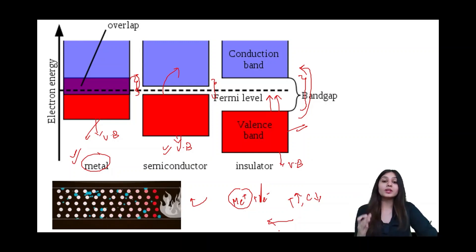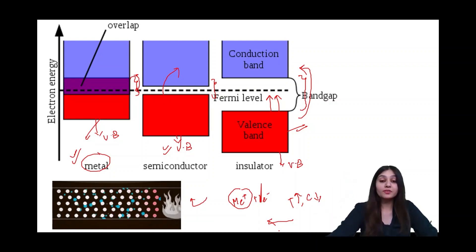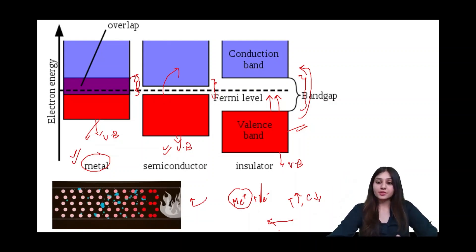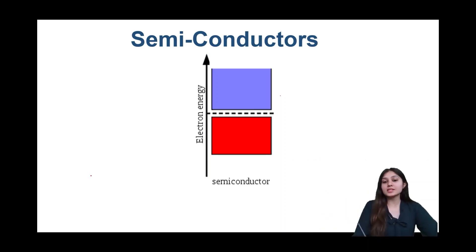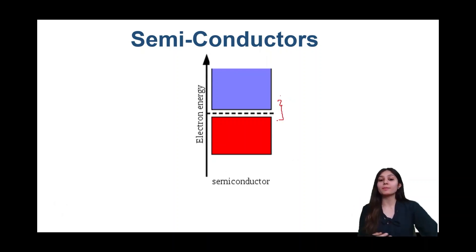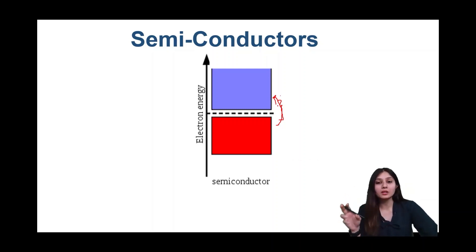In semiconductors, on the other hand, if you increase temperature, the conduction is going to increase because the electrons are getting energy to go to the conduction band. The energy gap is quite small, and as energy is supplied from the surroundings in the form of heat, the electrons from the valence band can go to the conduction band quite easily and hence conduct electricity — they will not be very good conductors, but they will become soft conductors.